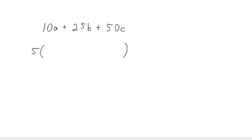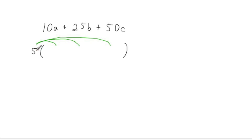In other words, we're going to have to take this 5 and distribute it to three different terms — one term here, one term here, and one term here — in order to get the original polynomial again. The question becomes: what do I need to multiply 5 by in order to get 10a? What do I multiply 5 by to get 10? The answer is 2. And in order to get an a there, I still have to multiply by an a. If you multiply 5 by 2a, you will get 10a.